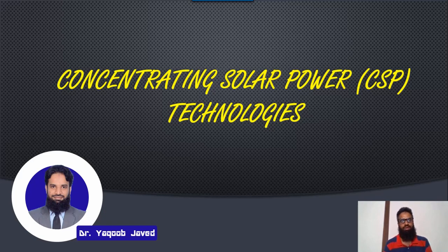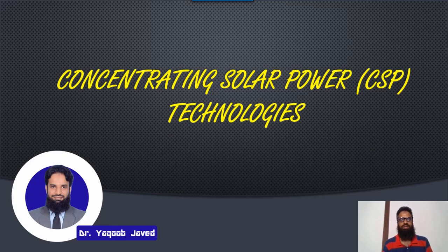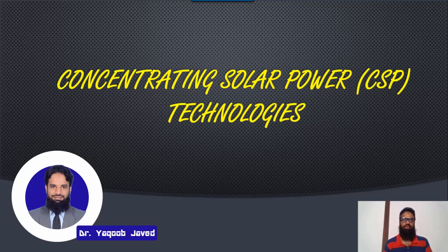Solar is an extraordinary source of energy, and from this source we can produce heat and electricity. There are three different ways to produce heat and electricity from solar: one is concentrated solar power, the second is photovoltaic systems, and the third is photovoltaic and thermal combination, known as PVT technologies. In this lecture I will be focusing on concentrated solar power, and in the next few lectures I will focus on PV and PVT technologies.